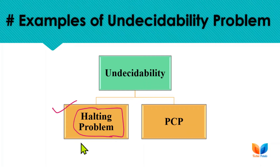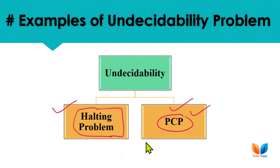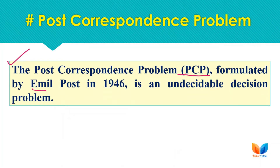These problems are also known as recursively unsolvable problems. We covered this in detail for the halting problem in the previous lecture, where we proved by contradiction that no such machine can exist. Here in this lecture we cover another undecidable problem — the PCP or Post Correspondence Problem — formulated by Emil Post in 1946. That is why the name includes the word 'post'.